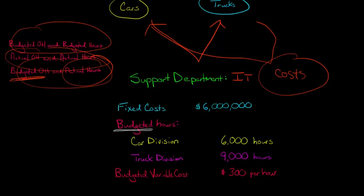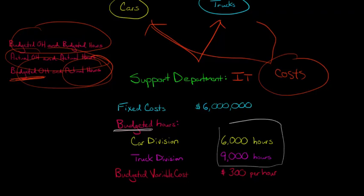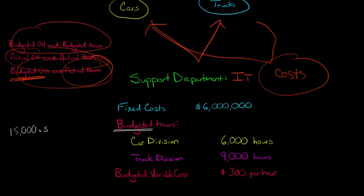All of this is budgeted. To calculate the single overhead rate, we need not just the fixed costs but also the total budgeted variable costs. The variable cost is $300 per hour. Between the two departments, there are 15,000 total budgeted hours — 6,000 from cars plus 9,000 from trucks. Multiplying 15,000 by $300 gives us $4.5 million in total budgeted variable costs.